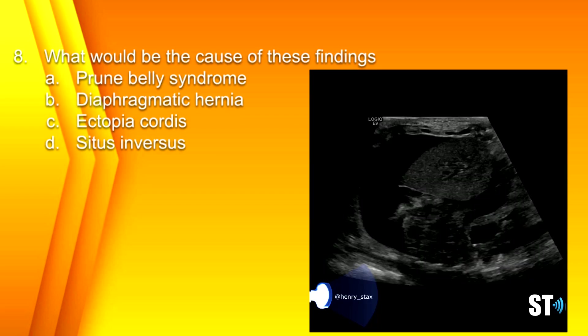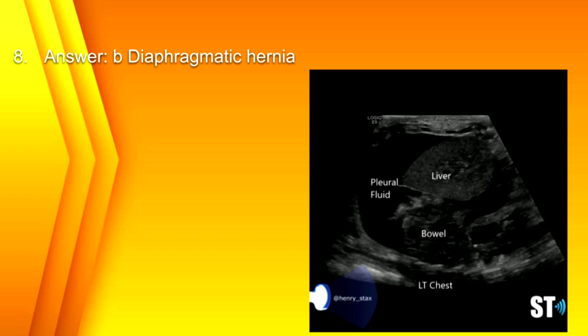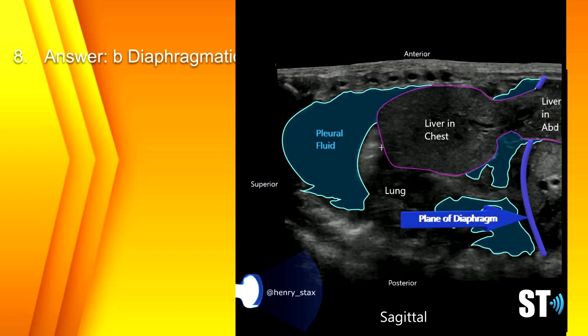Number 8. What would be the cause of these findings? A. Prune belly syndrome, B. Diaphragmatic hernia, C. Ectopia cortis, or D. Situs inversus? The answer is B. Diaphragmatic hernia. Here, this is the chest, and you can see you have liver surrounded by pleural fluid. The diaphragm would be around right here — this is a case of a very severe diaphragmatic hernia.